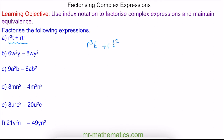To identify the common factors, I'm going to write this out the long way: r multiplied by r multiplied by r multiplied by t, plus r times t squared. We can see that one r is common, so this goes on the outside of our brackets, and the t is also common, so we have a t on the outside as well. We're left with the two remaining r's, which give us r squared, and the t on the other side — so r squared plus t.